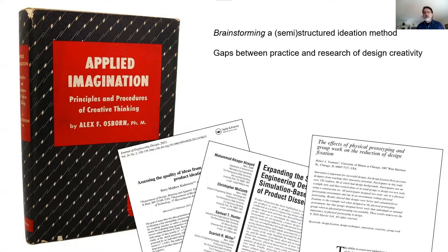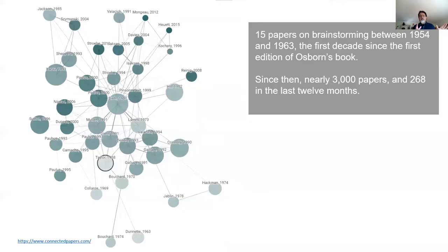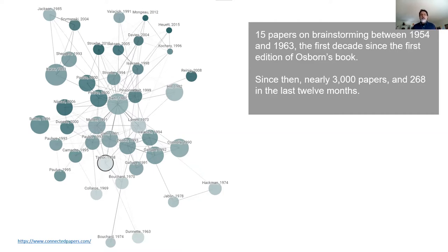In the first part of the paper you are going to see a lot of the key ideas that Osborne presents when talking about brainstorming — how the sessions should be prepared, how they should be run, what to do after a session finishes, the importance of facilitation, the rules of brainstorming, and the uses of brainstorming in ideation.